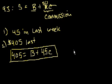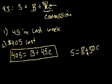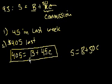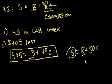$405 equals b plus 45c. And we need to figure out s equals b plus 50c. We have two linear equations but three unknowns: s, b, and c. So we don't have enough information to solve it. The answer is E — both statements together still do not give us enough information.